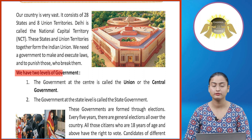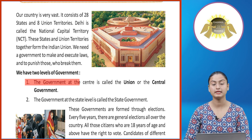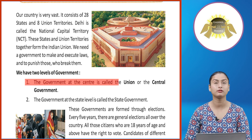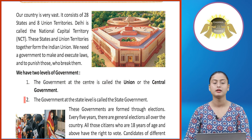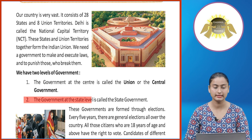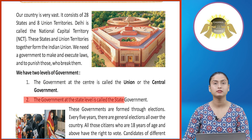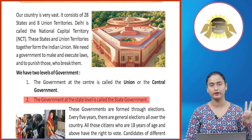We have two levels of government. Number 1: the government at the center is called the Union or the Central Government. Number 2: the government at the state level is called the State Government.